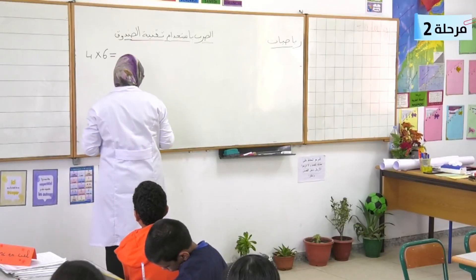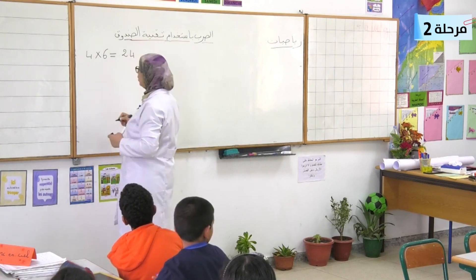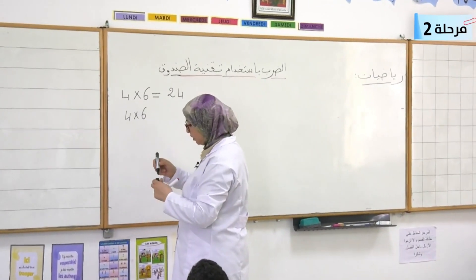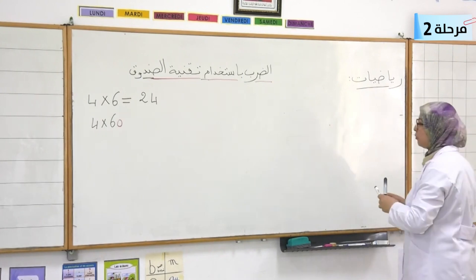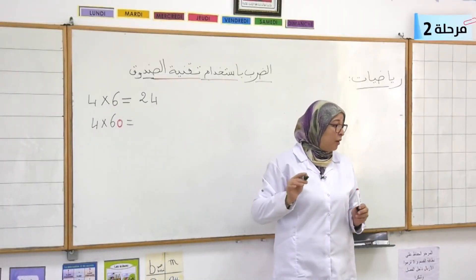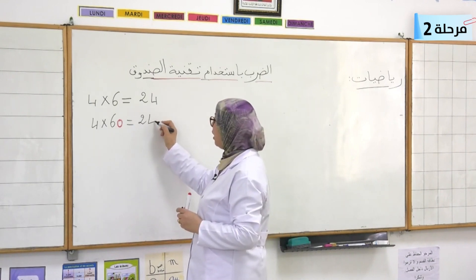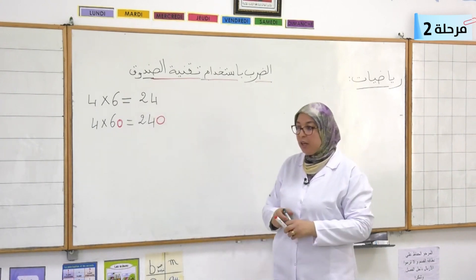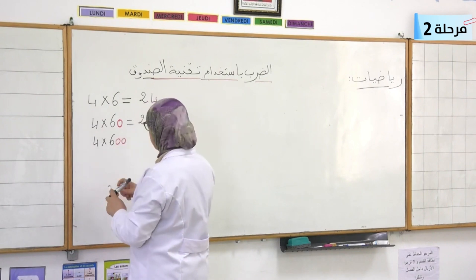الجداء أربعة في ستة إذن أربعة في ستة تساوي أربعة وعشرون. لاحظوا، الآن سأحسب أربعة في ستون. لكن انتبهوا، إذن أنطلق من جداء أعرفه. أنا أعرف أن أربعة في ستة تساوي أربعة وعشرون، أكتب أربعة في ستة تساوي أربعة وعشرون، ثم أضيف الأصفار التي احتفظت بها. ننتقل إلى المثال الموالي: أربعة في ستمائة.